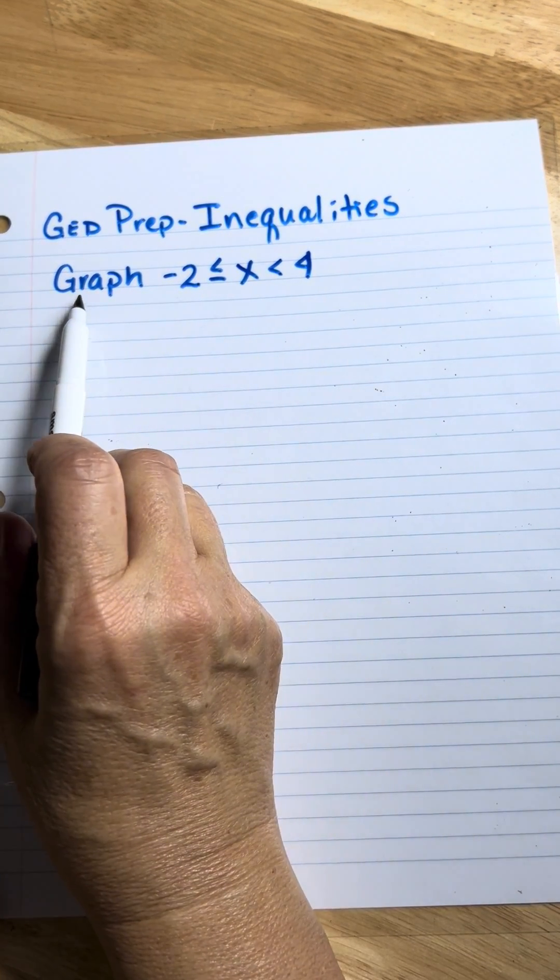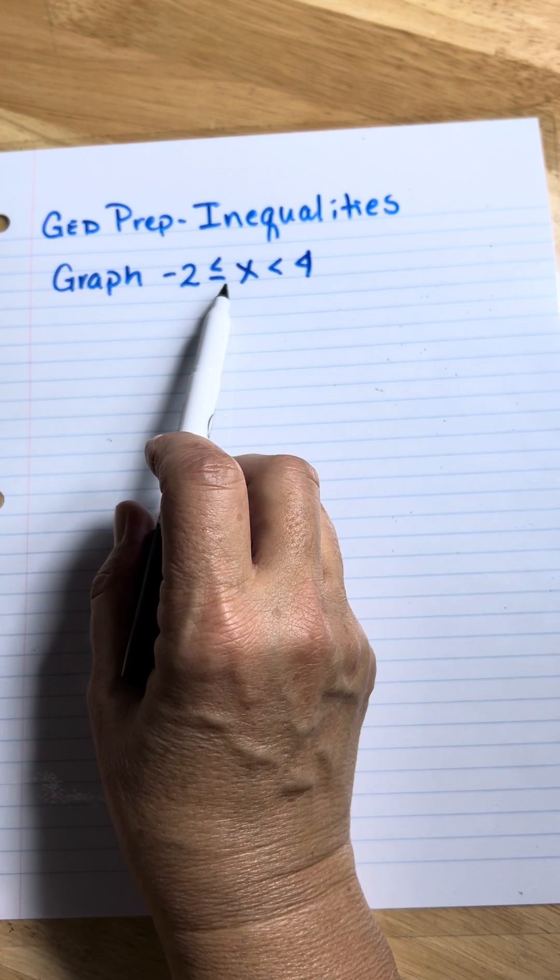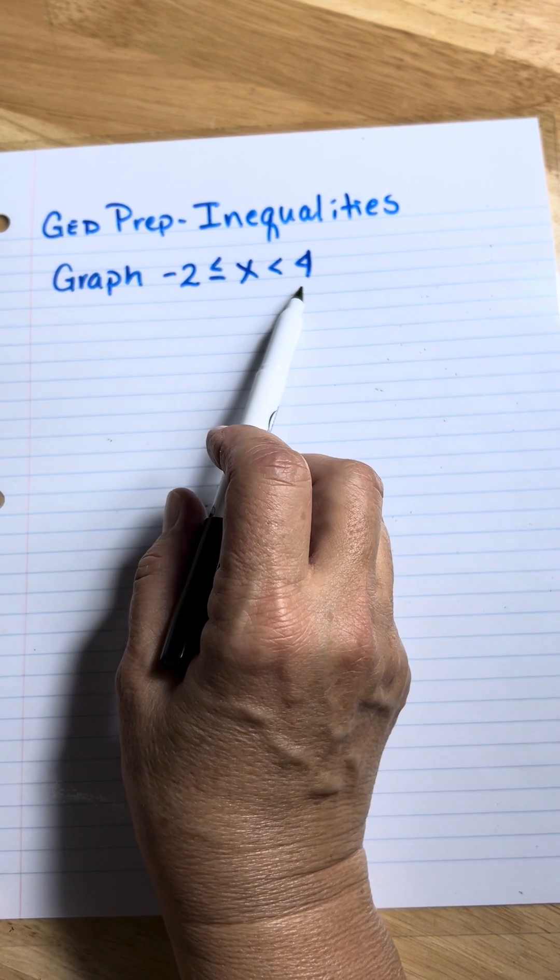In this problem, they ask us to graph the inequality: negative 2 is less than or equal to X is less than 4.